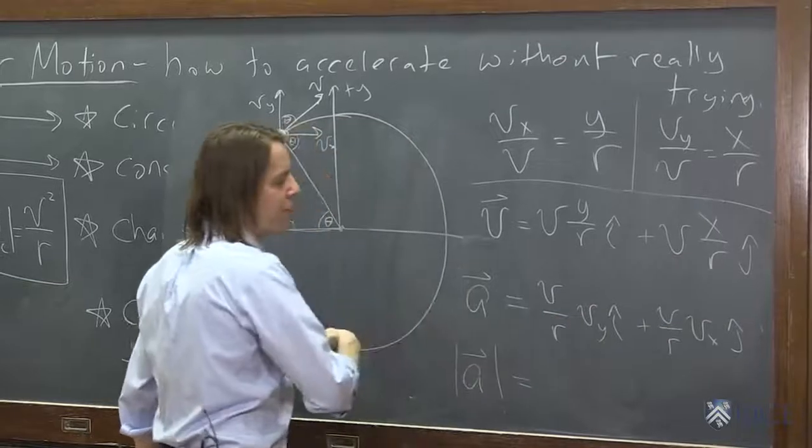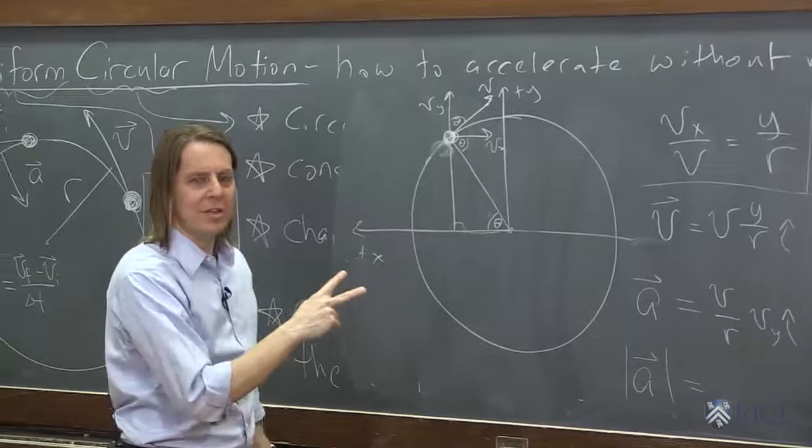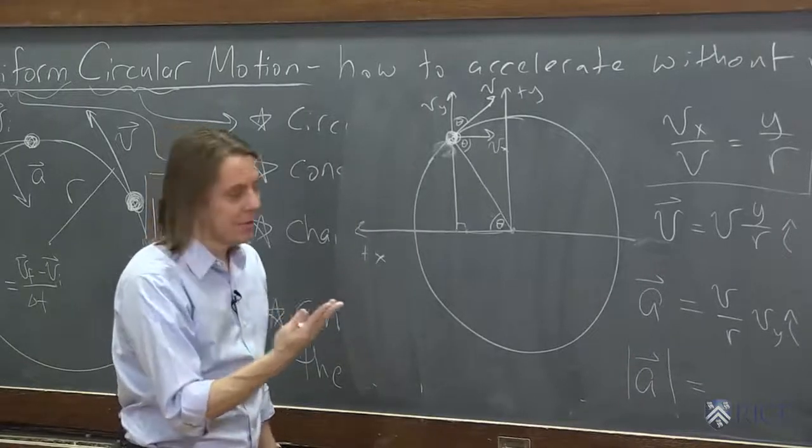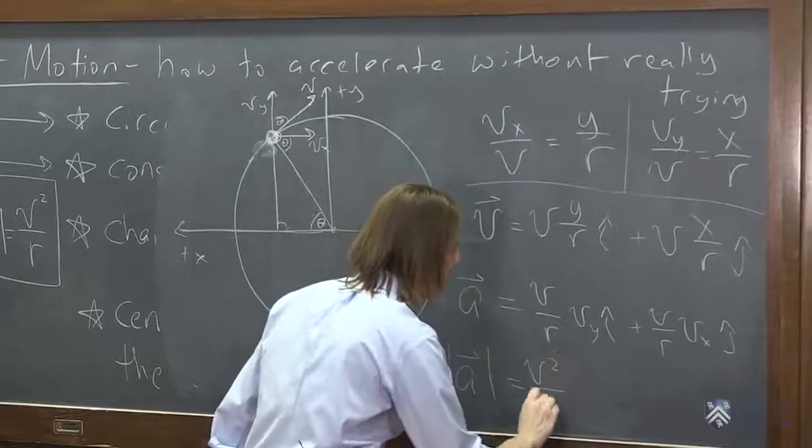So the v over r comes out and the square root of vx squared plus vy squared, even though they're in the wrong place, is still v. Right? So the v from the vx and the vy multiplied by that v is v squared over r.